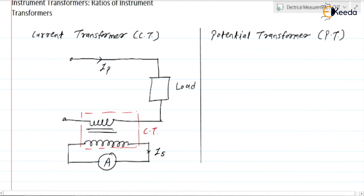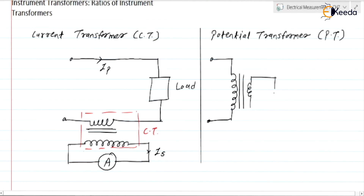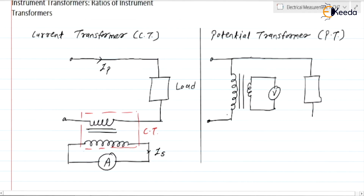CT is used to reduce the strength of the current signal. Similarly, PT is used to reduce the strength of the voltage signal. High voltages in the kilo-volt range cannot be measured by a single voltmeter, so we need to reduce the voltage level using a PT — the potential transformer.